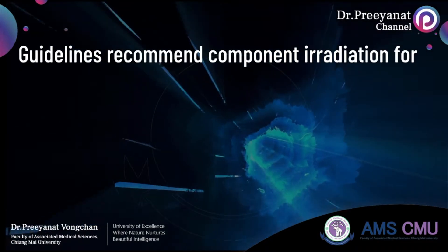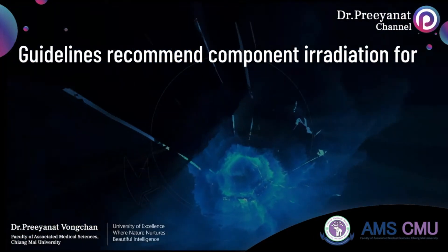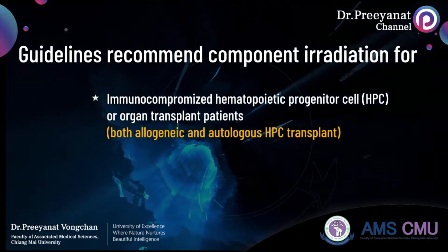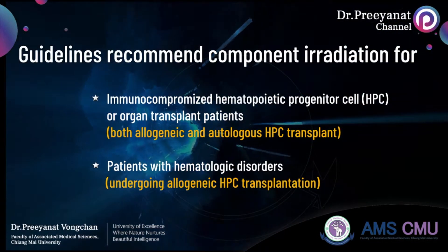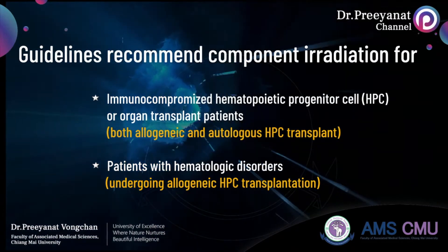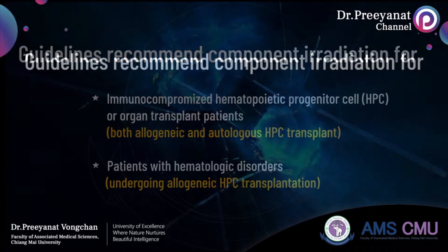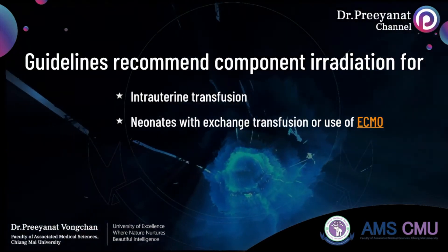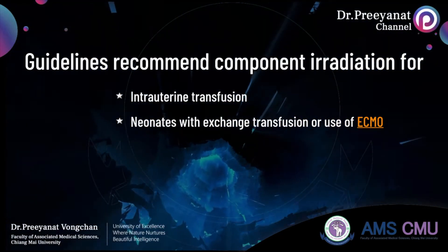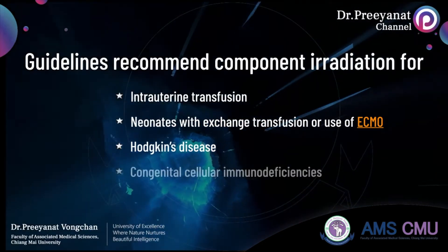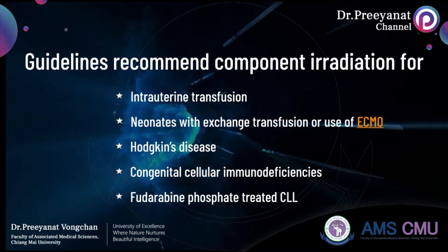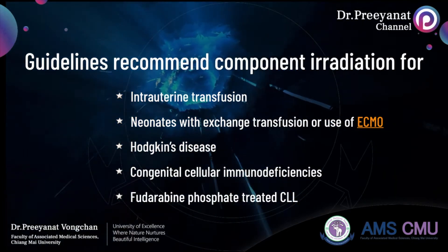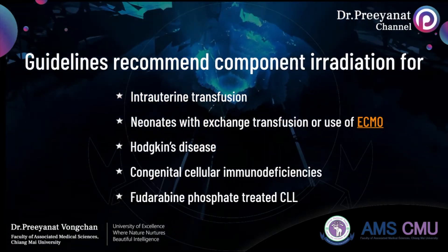Published guidelines also recommend irradiated blood components for immunocompromised hematopoietic progenitor cell or organ transplant patients, patients with hematologic disorders undergoing hematopoietic progenitor cell transplantation, intrauterine transfusion, neonates with exchange transfusion or use of extracorporeal membrane oxygenation, Hodgkin's disease, congenital cellular immunodeficiencies, and fludarabine phosphate-treated chronic lymphocytic leukemia. However, it is interesting that TA-GVHD has not been reported in AIDS patients.